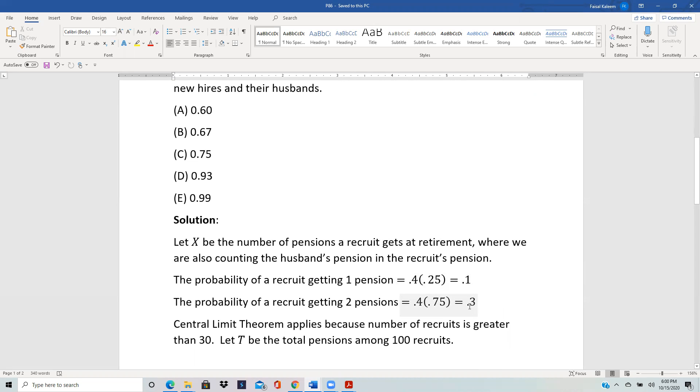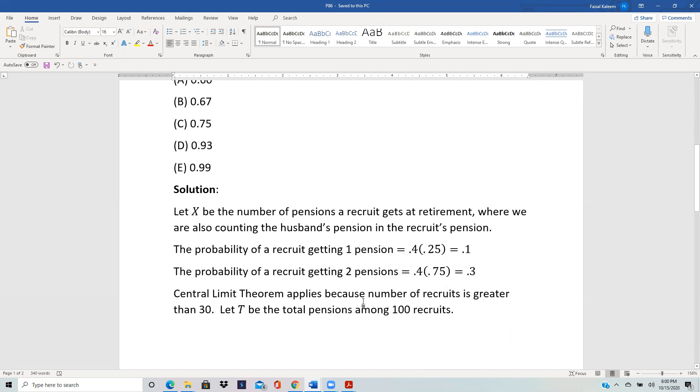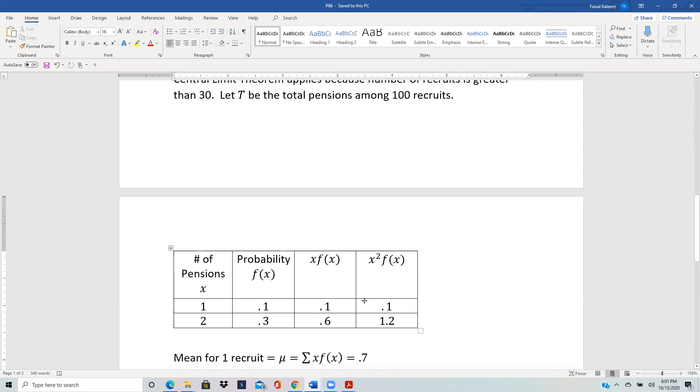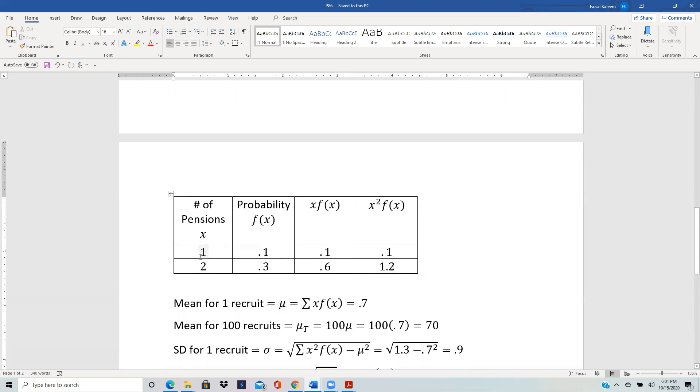Now central limit theorem will apply because we are dealing with a hundred recruits and we are trying to calculate the total number of pensions among the hundred recruits. We could have one pension or two pensions. These are the only non-zero scenarios. We also have the zero scenario, but we don't need to consider it because that's not going to contribute.